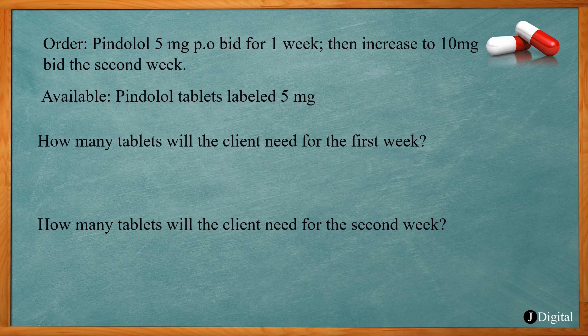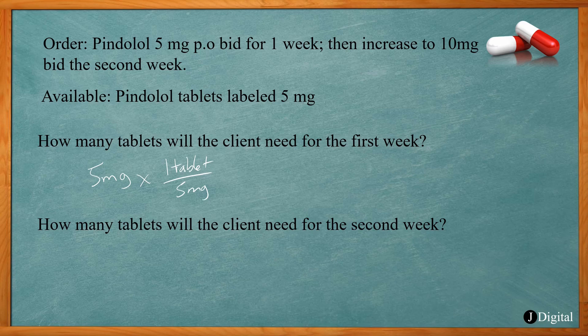In this problem we're ordering pindolol 5 milligrams PO BID for one week, then increasing to 10 milligrams BID for the second week. We have available pindolol tablets labeled 5 milligrams. BID means twice a day. For the first week: we need 5 milligrams and each tablet is 5 milligrams, so 1 tablet per dose, twice a day is 2 tablets per day, times 7 days equals 14 tablets for the first week.